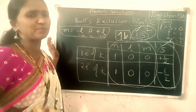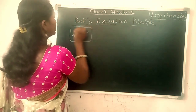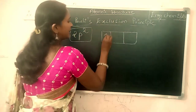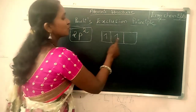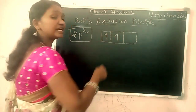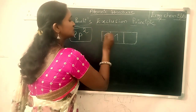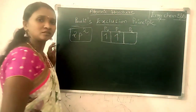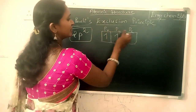Now see the second example for Pauli's Exclusion Principle. The second example is two electrons from the 2p orbital. See the box method also. According to Hund's rule of maximum multiplicity, the two electrons are arranged one each into separate orbitals. Hund's rule states that electron pairing cannot take place until each sub-shell has at least one single electron. The P orbital has three orientations: Px, Py, and Pz.